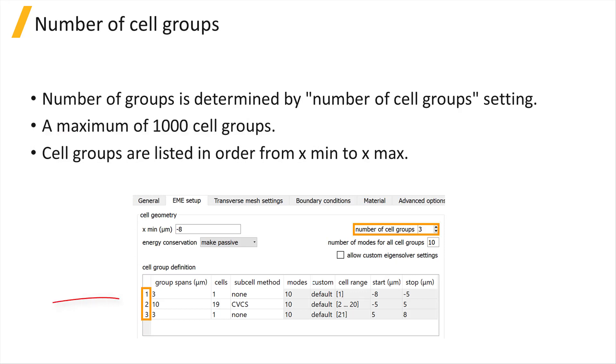The number of groups, which corresponds to the rows in the table, is determined by the number of cell groups setting. You can add a maximum of 1000 cell groups. Cell groups are listed in order from Xmin to Xmax.